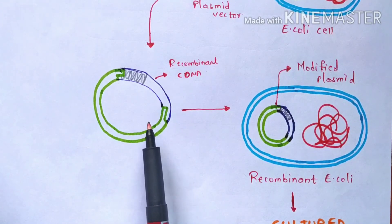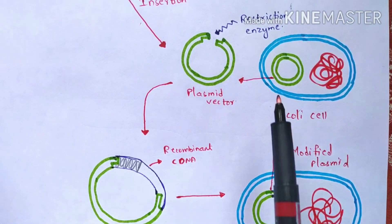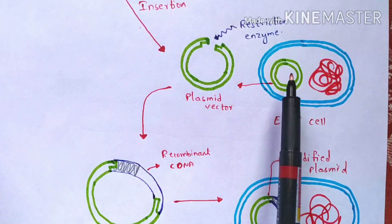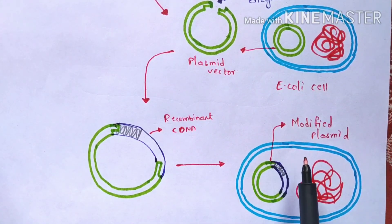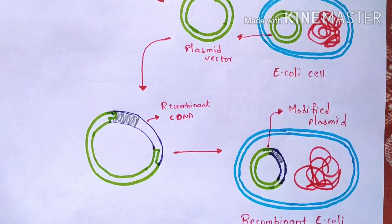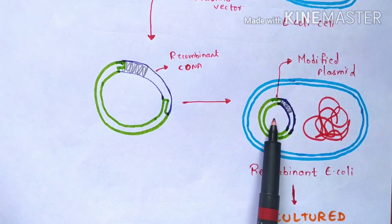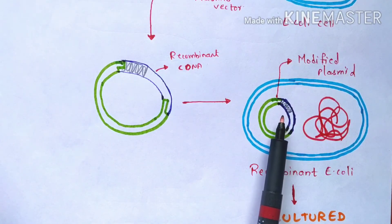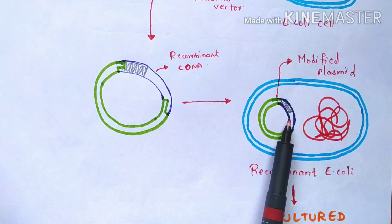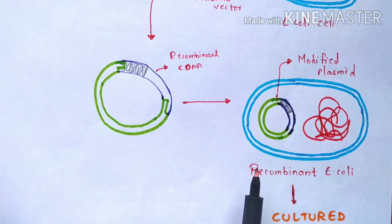This recombinant cDNA plasmid vector is then reinserted into the same E. coli cell — the space left empty after plasmid extraction is now filled with the recombinant cDNA. This E. coli cell is now called a recombinant E. coli cell because it contains the modified plasmid — the recombinant cDNA — which is related to the human growth hormone, as it was prepared from the growth hormone gene extracted from the pituitary gland.